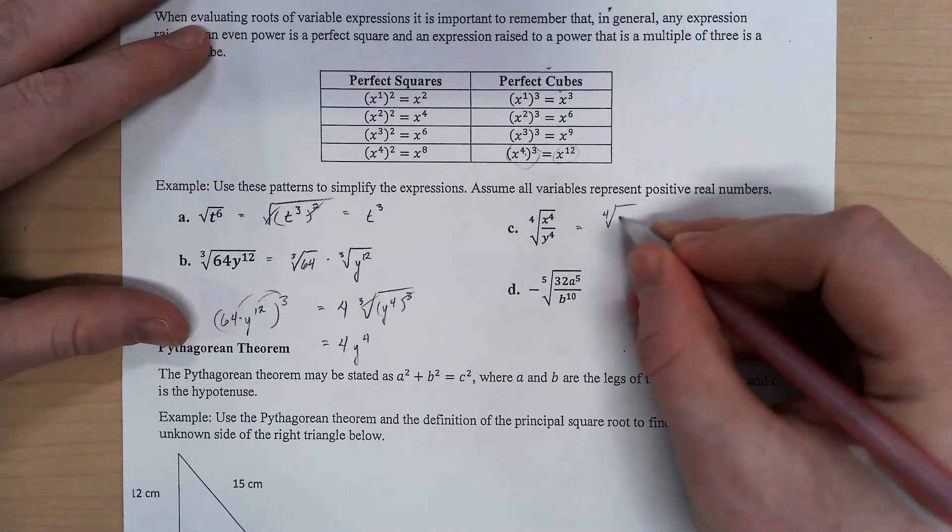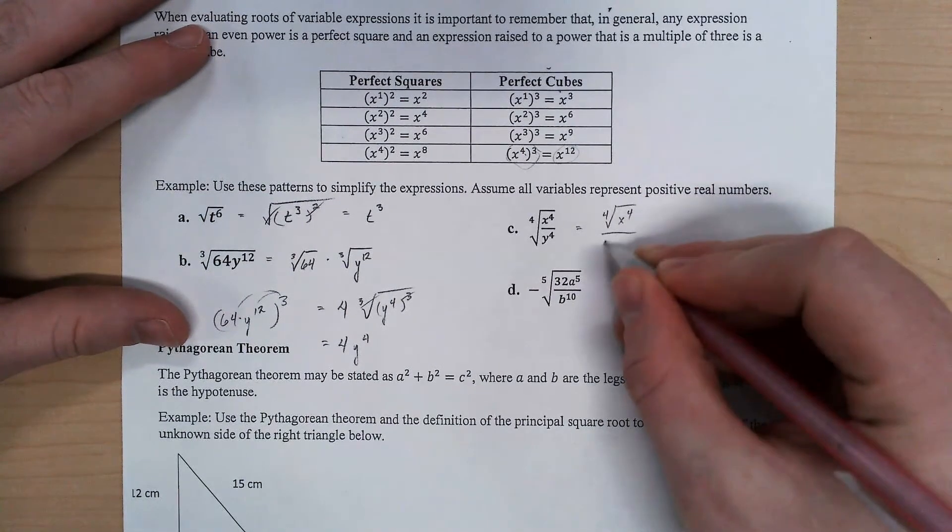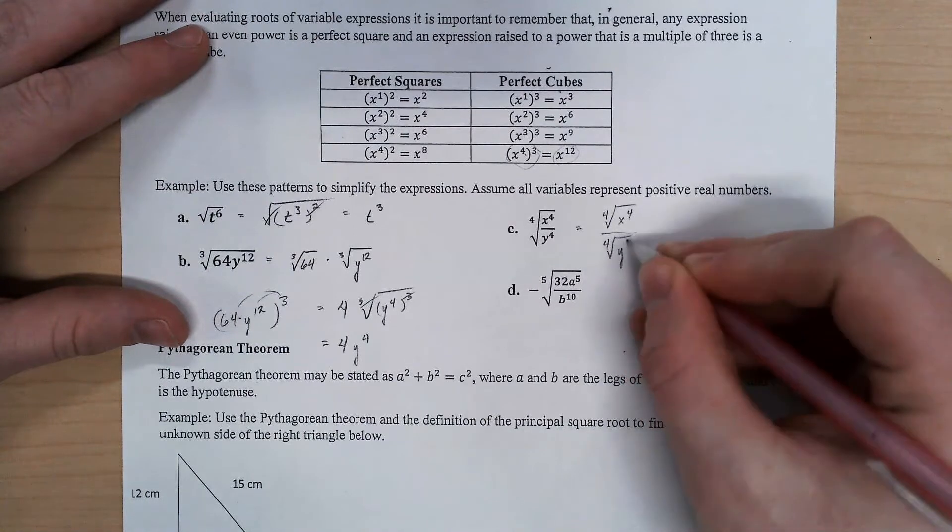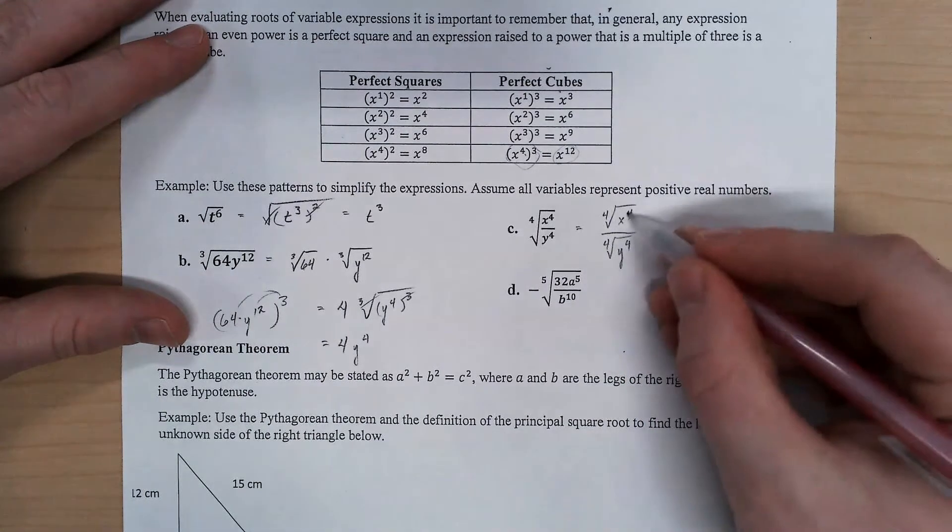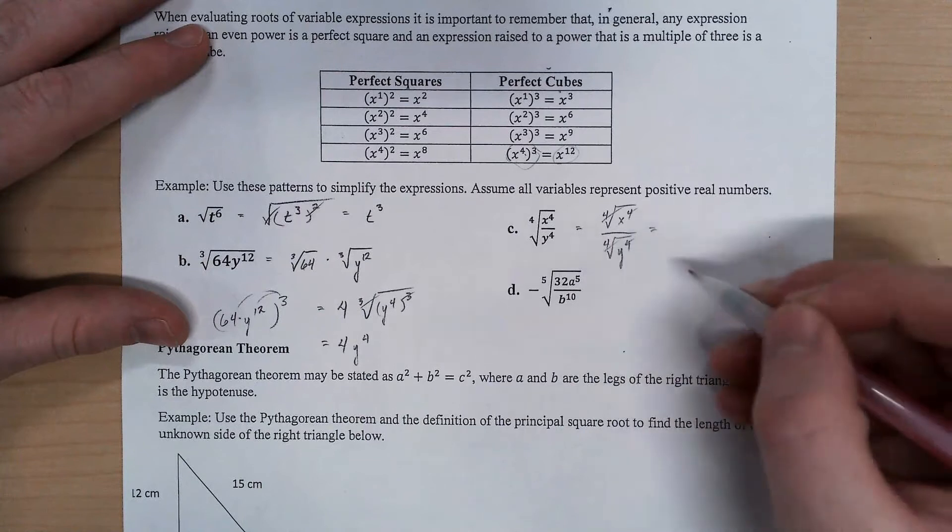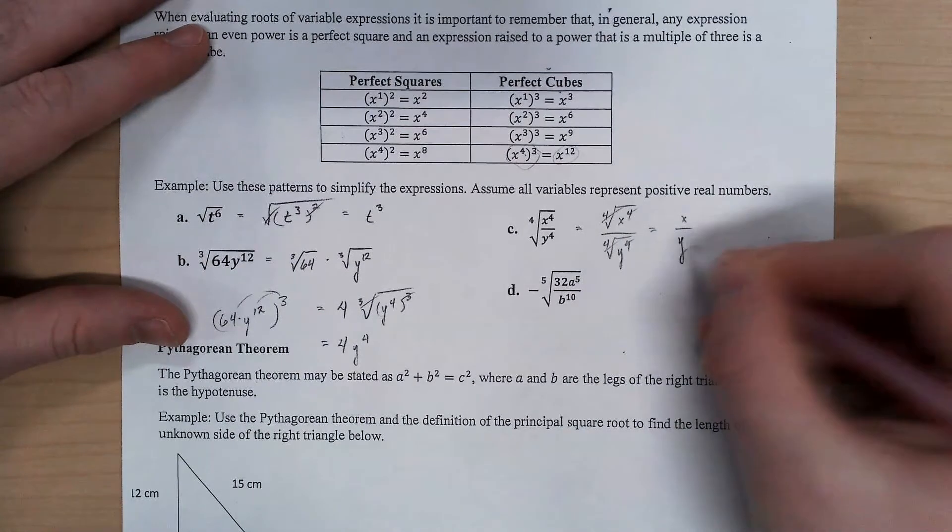So same thing. I can distribute this to the top and the bottom, just like I could an exponent. Good to cancel. We've got x over y.